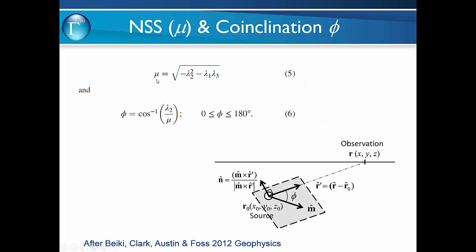The normalised source strength mu is derived from the three eigenvectors. The co-inclination angle phi is derived from the second eigenvector and the normalised source strength, and has a range from 0 to 180 degrees. It is actually a useful indicator where M is the magnetisation vector of the target and the observation point on the surface is where you've got the magnetometer.